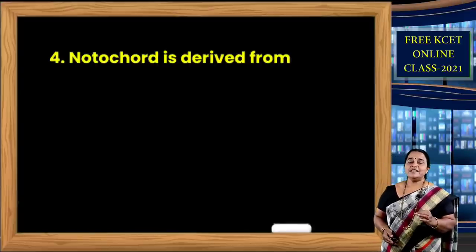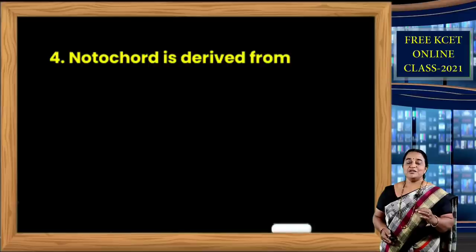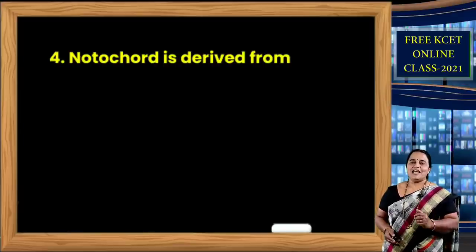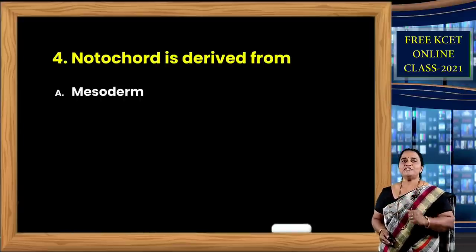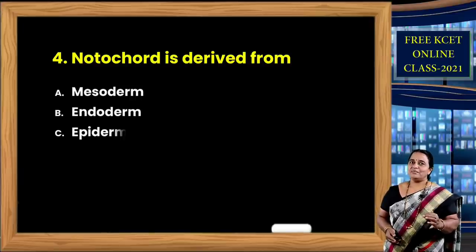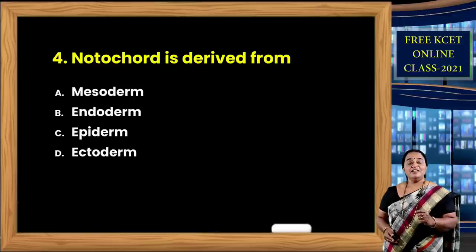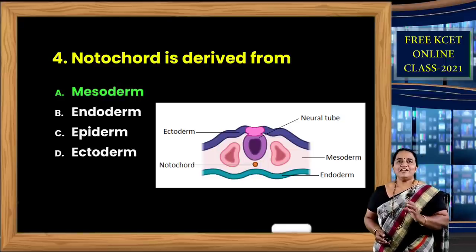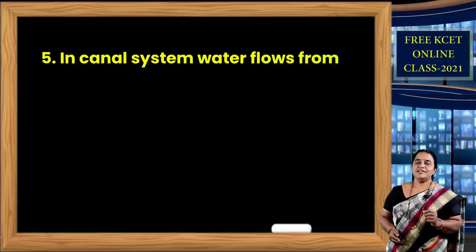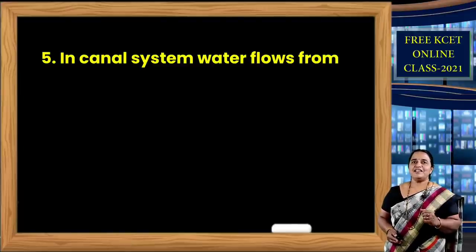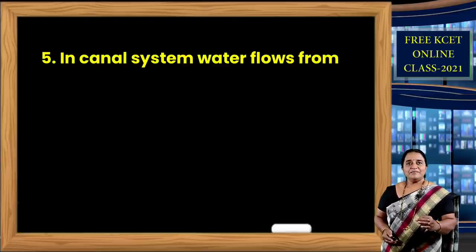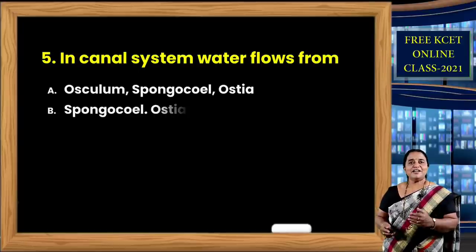The correct answer is mesoglia — an undifferentiated layer found in coelenterates and ctenophorans during embryonic development, separating ectoderm from endoderm. Question 4: Notochord is a solid dorsal supporting structure found in chordates and absent in non-chordates. During embryonic life, this structure is derived from — options: mesoderm, endoderm, epiderm, ectoderm. The correct answer is mesoderm. So notochord is a mesodermal derivative.